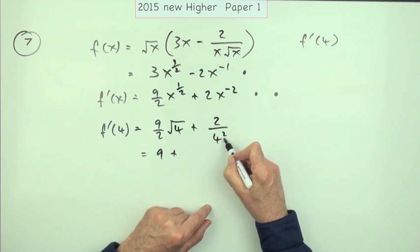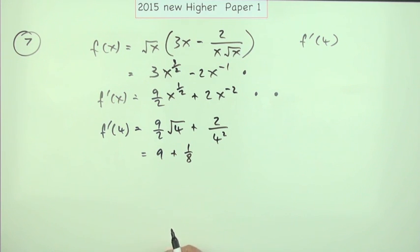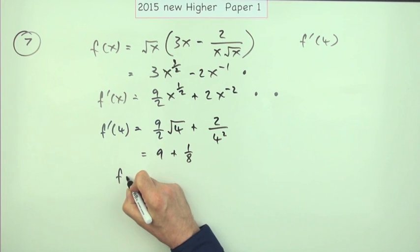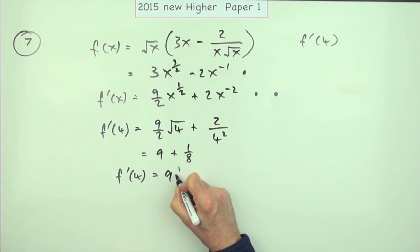...and that's 16, 2 over 16 is an eighth, so you've got 9 plus an eighth, which is a mixed number. So you could just say it's 9 and an eighth. So f'(4) is 9 and an eighth, and that's the fourth mark.